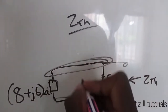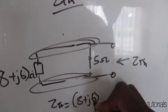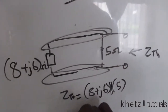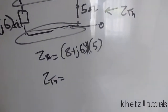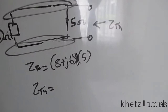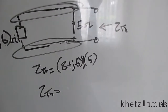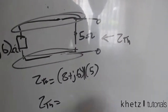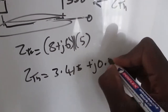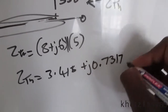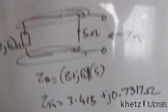Now you'll see that Zth is therefore equal to the parallel combination of these two. Your Zth — let's punch this into the calculator: (8 + j6) multiplied by 5, divided by (5 + 8 + j6) — and the answer to that is 3.415 + j0.7317 ohms. So now we've found our Zth.